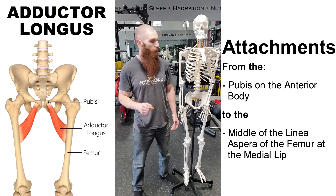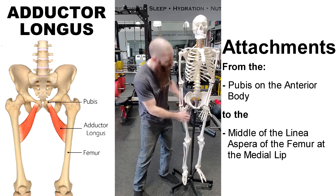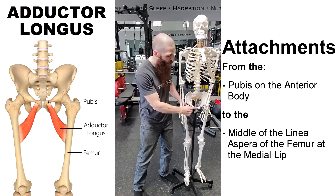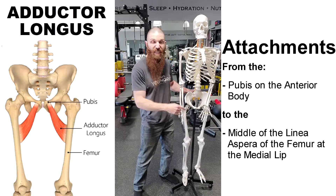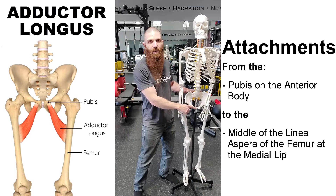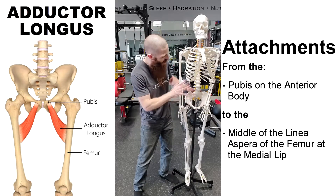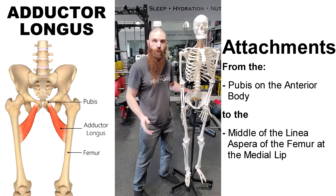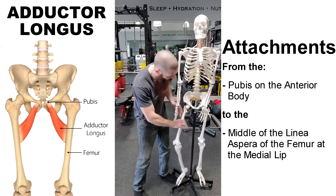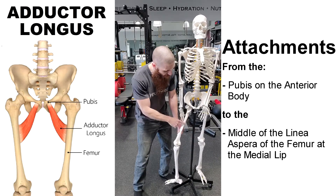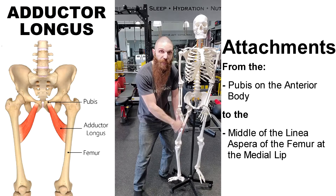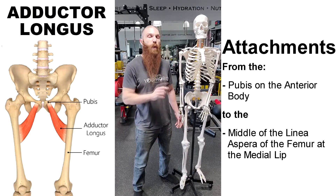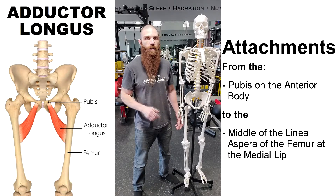There are only two bones that we need to be covering, and that's going to be the pelvis and the femur. Right over here is your pelvis, and most inferior and medial is going to be the pubic symphysis. And then just lateral and most anterior to that is going to be the anterior body of the pubis. That's it in terms of the pelvis. Now we want to take a look at the femur — this is your thigh bone — and with regard to the femur, posterior and medially we have the linea aspera, and on the medial aspect we have the medial lip of the linea aspera. That's pretty much it in terms of the important bony landmarks when discussing the adductor longus muscle.